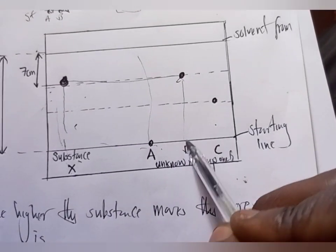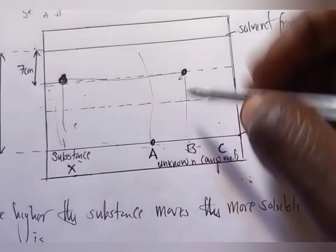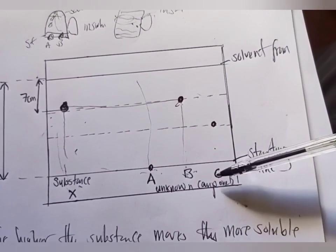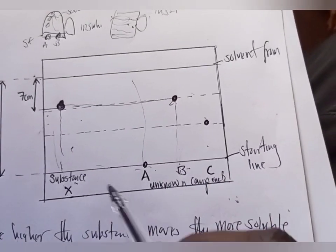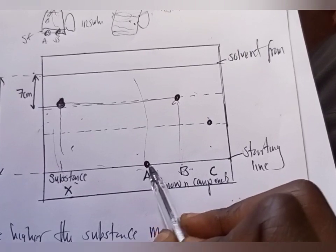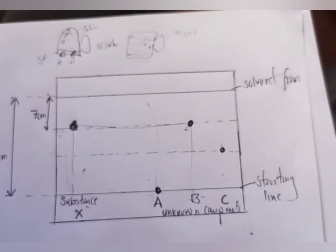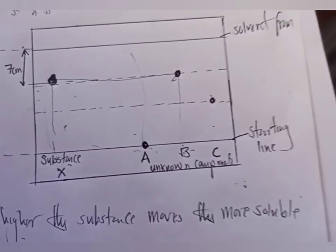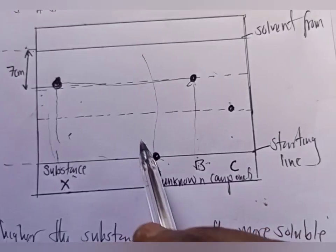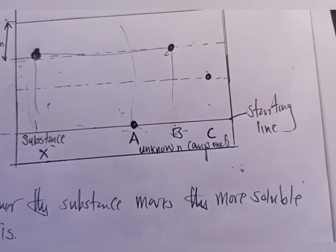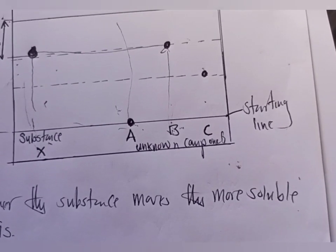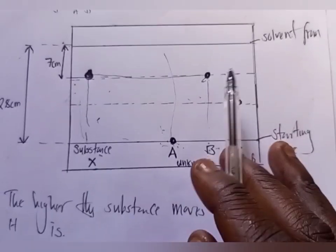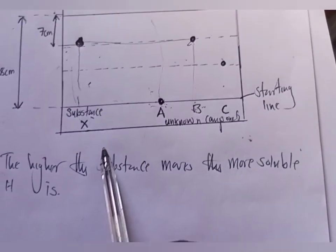Substance B has dissolved — its spot has gone down, like it went down the cup. Substance C has also gone down and dissolved. But substance A is just at the line, meaning it is insoluble. The first question asks which component was insoluble, so the answer is A. The explanation is: this is because substance A has not moved from the starting point.